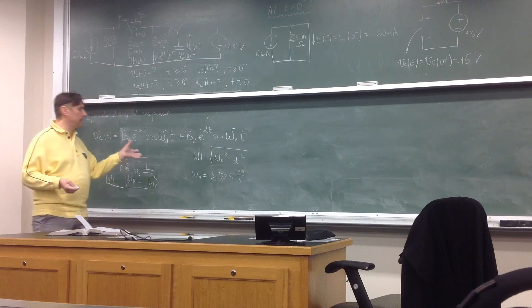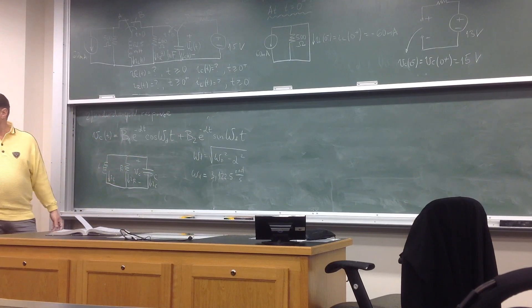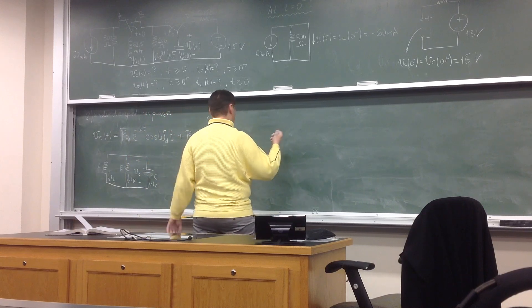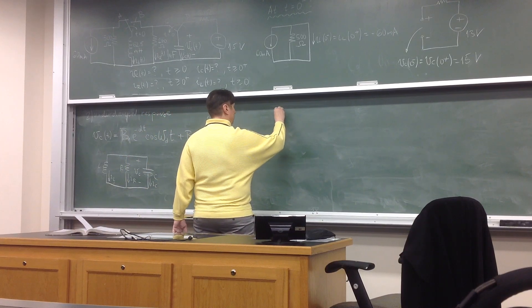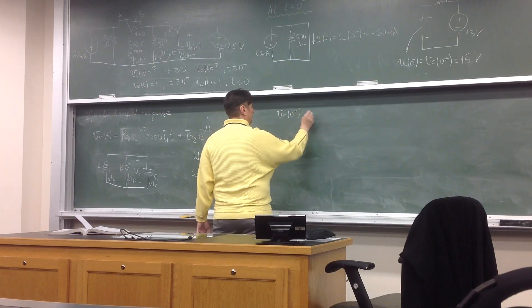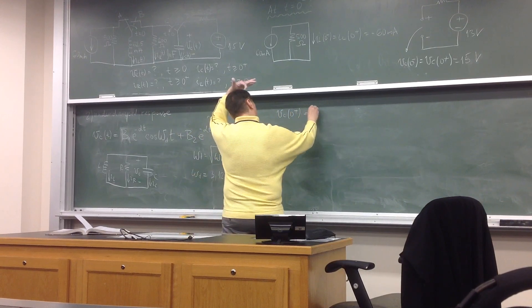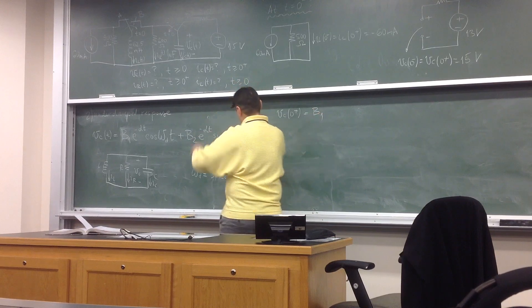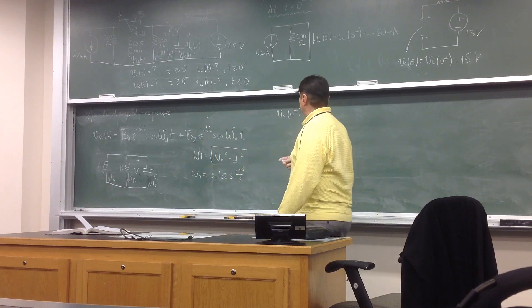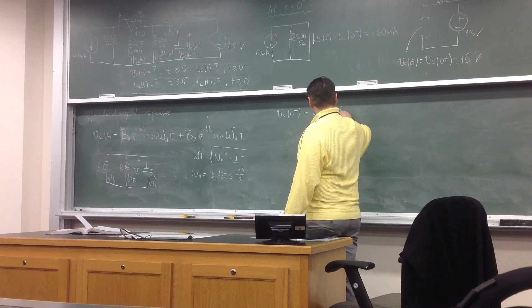Alright, so now to plug in, again you need two equations, right? So for B1 and B2, you know alpha 2500. So Vc(0+) will give you that's equal B1, because sine of zero is zero, okay. So the second term is cancelled. That's equal 50 volts.